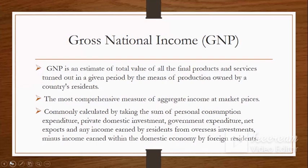GNP is commonly calculated by taking the sum of personal consumption expenditure, private domestic investment, government expenditure, net exports, and any income earned by residents from overseas investment, minus income earned within the domestic economy by foreign residents. After all deductions and calculations, you get your GNP or gross national income.